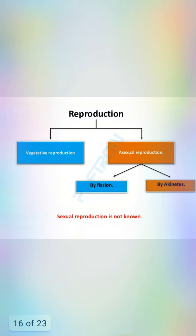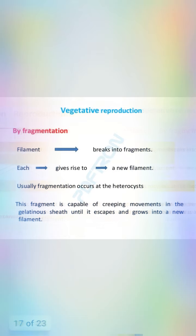In Nostoc there are two methods of reproduction: first, vegetative reproduction; second, asexual reproduction. Asexual reproduction is by two parts — by fission and by akinetes.